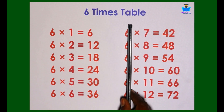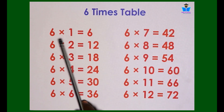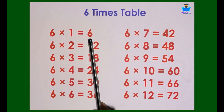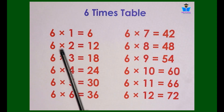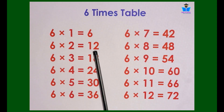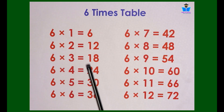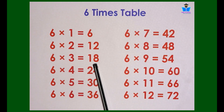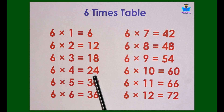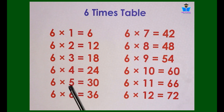6 times tables. 6 ones are 6. 6 twos are 12. 6 threes are 18. 6 fours are 24. 6 fives are 30.